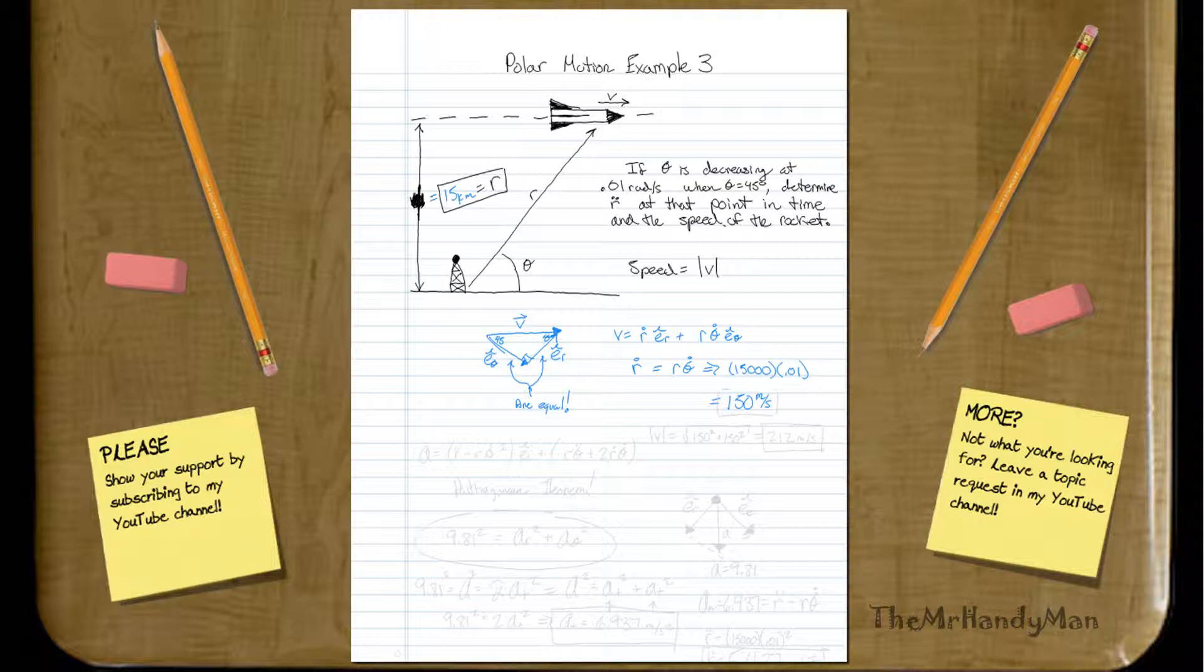Well, if you want to know the speed, because we know that r dot is equal to 150, then we know that r times theta dot is equal to 150. So actually, the speed, the v, is going to equal essentially 150 squared plus 150 squared, all square root, which will equal 212 meters per second. Awesome. I want little to no work to get to that point.